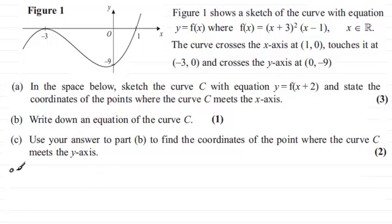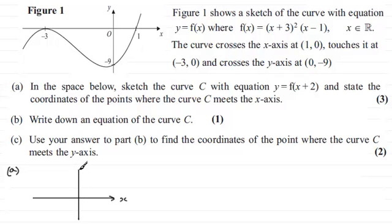For part a we have to sketch the curve y equals f of x plus 2. What this does — we should be familiar with it — is whatever graph you've got, it will translate it two units to the left. So if we mark on our axes, the point at minus 3 is now going to be shifted to minus 5 on the curve.